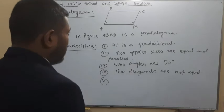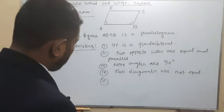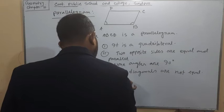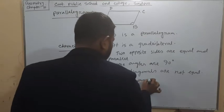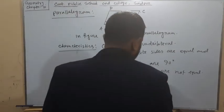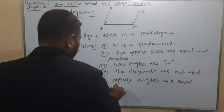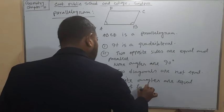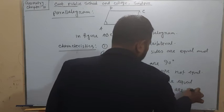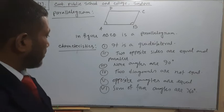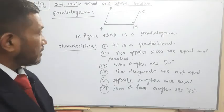The measure of angles will not be 90 degrees — no angles are 90 degrees. Opposite angles are equal. We can write: opposite angles are equal. The sum of four angles is 360 degrees. These are the main characteristics of a parallelogram.